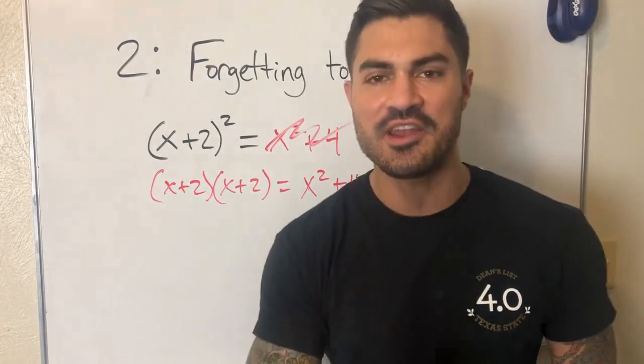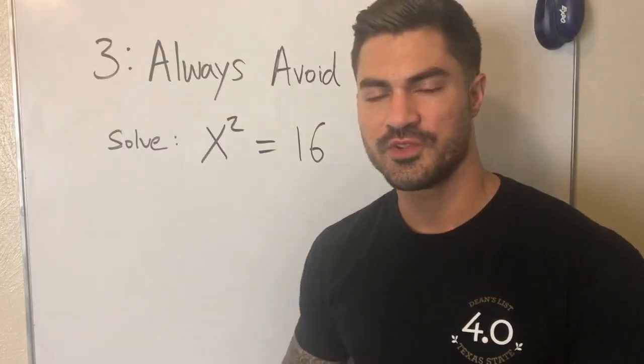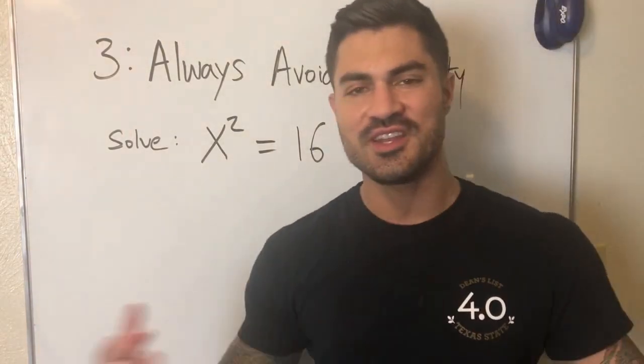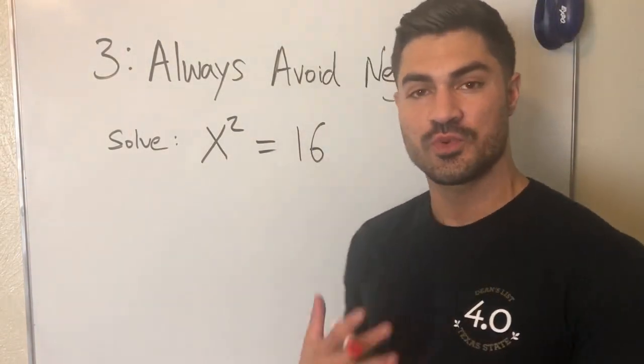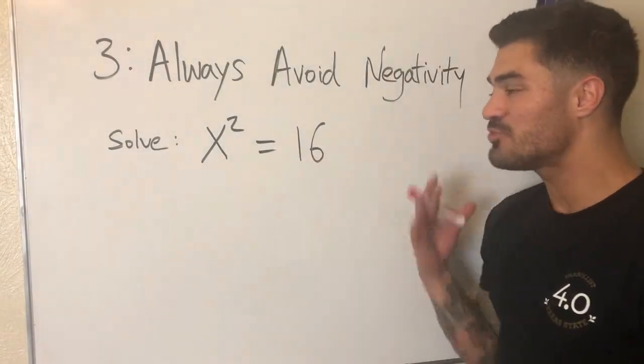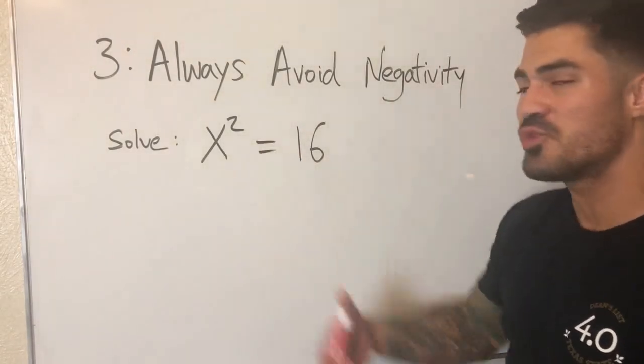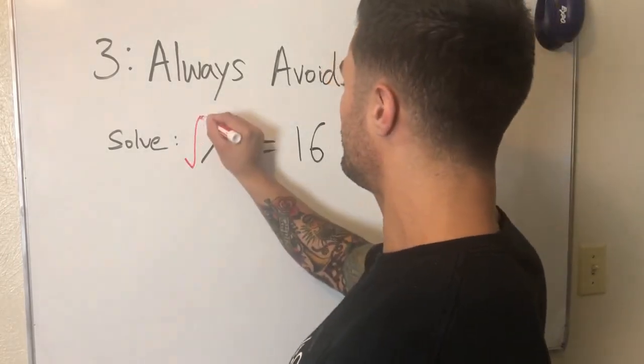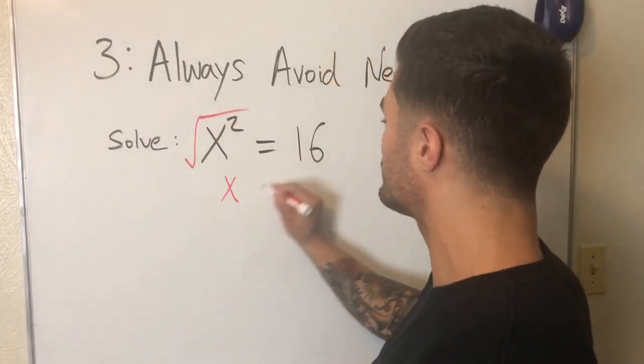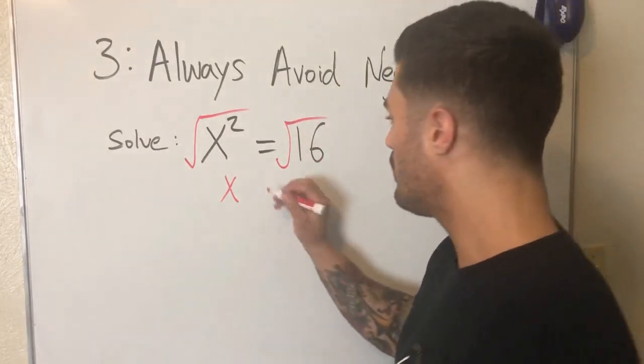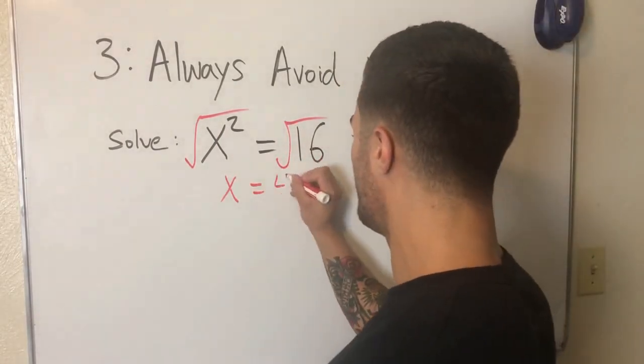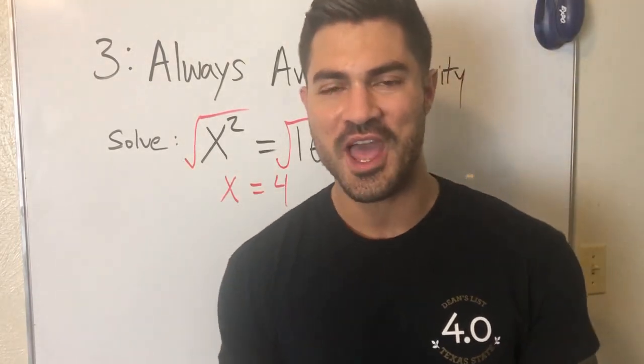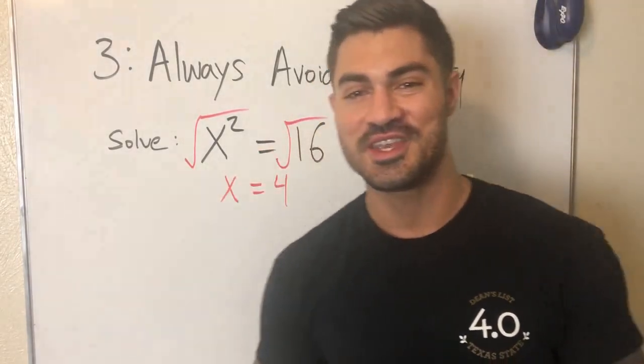Alright guys, so this third mistake I call 'Always Avoid Negativity,' which is not necessarily a bad thing, but in this context we're gonna see why it's a bad thing. Okay, X²=16, this is what I'm solving. Real easy, right? X squared, how do I get rid of the squared? I square root. So what happens here? Square root that, gets rid of that square, I'm left with X. Square root, what's the square root of 16? 4. So I get X=4, right? Wrong. Well technically it's only half wrong, or I guess if you avoid negativity you could say it's half right.